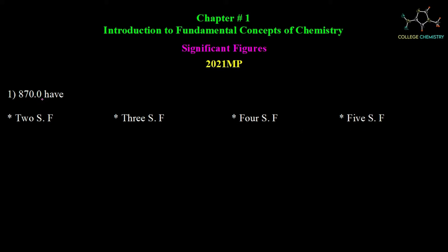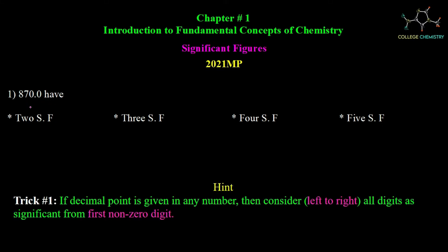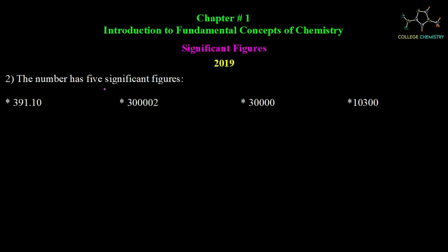This number has a decimal point. In the presence of a decimal point, we consider left to right. The first digit that is non-zero is 8, and from there all digits are considered significant. So 870.0 has 4 significant figures. The correct answer is 4 significant figures.